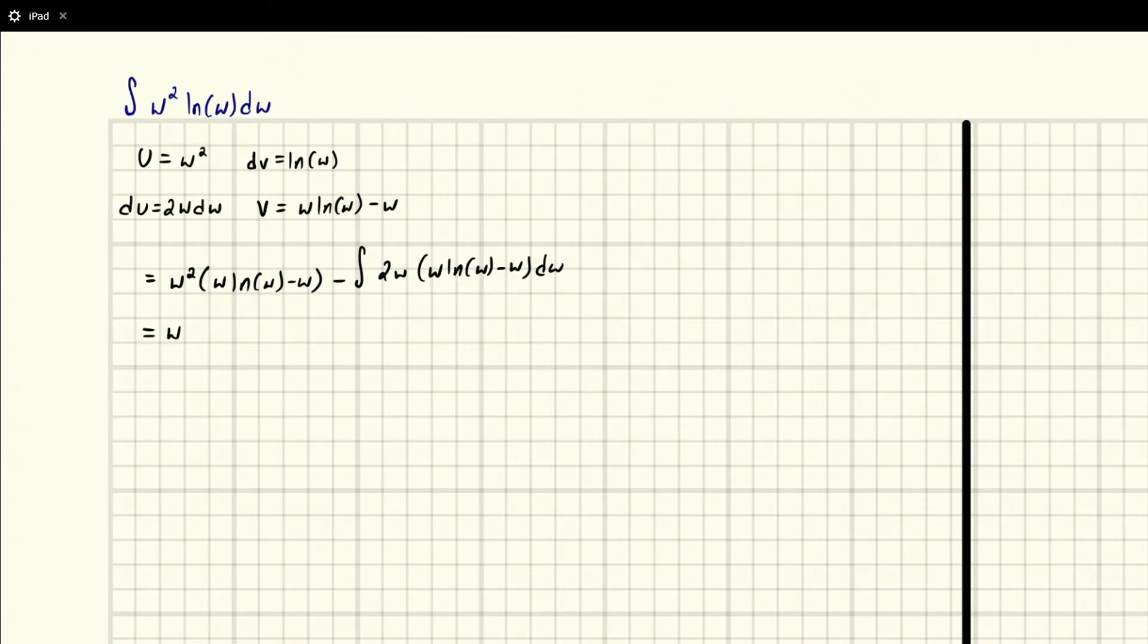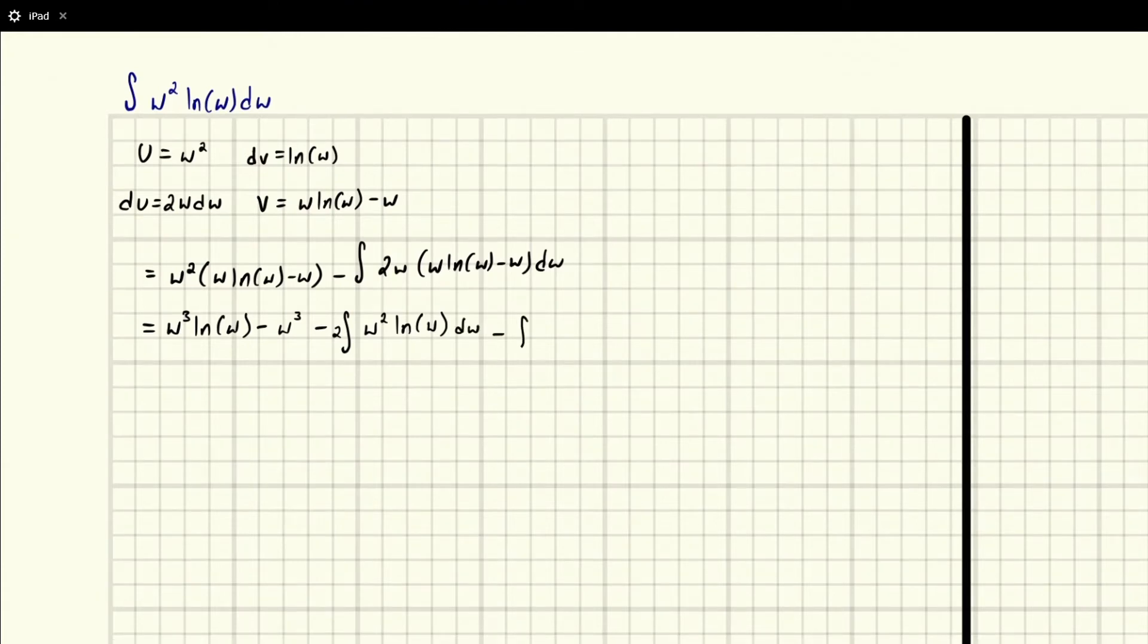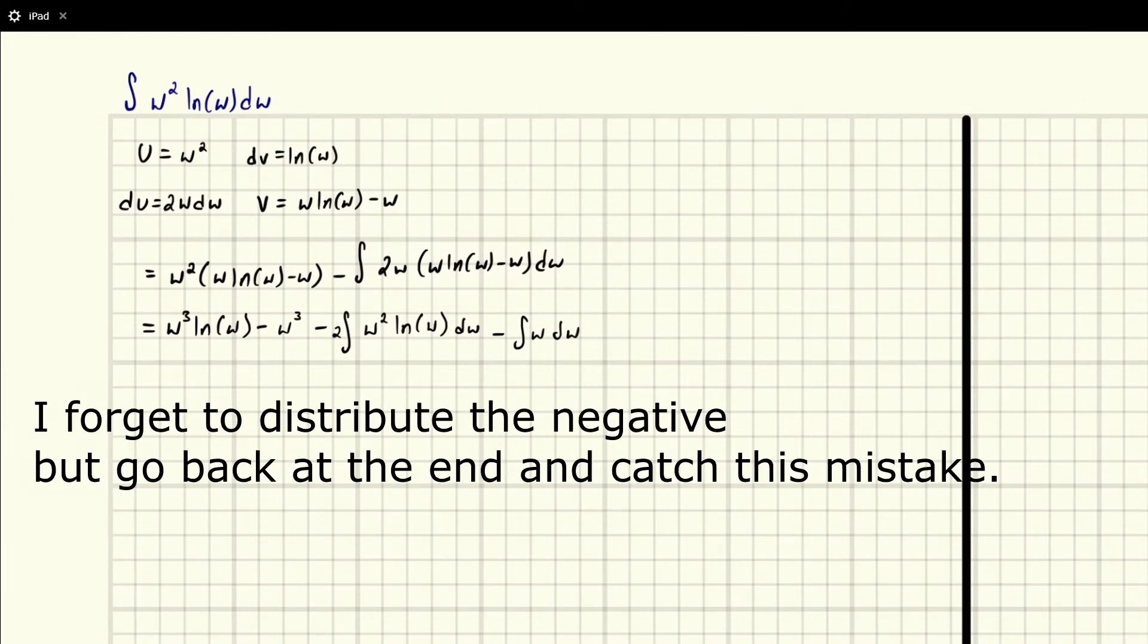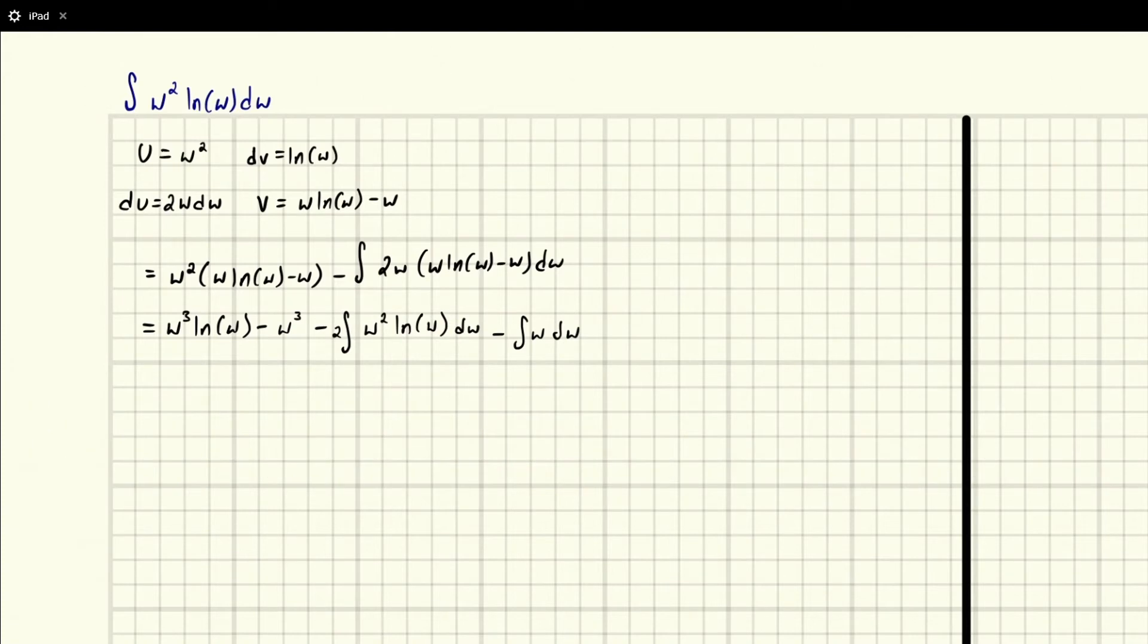And let's just write this out as w cubed natural log of w minus w cubed minus. And what we're going to do is we're going to write this integral out two ways. First way is we're going to write it out with the 2 on the outside, and then we're going to have w squared natural log of w dw minus the integral of w dw. So I just distributed this integral here and here. We can do that, right? Because the integral is a linear operator.